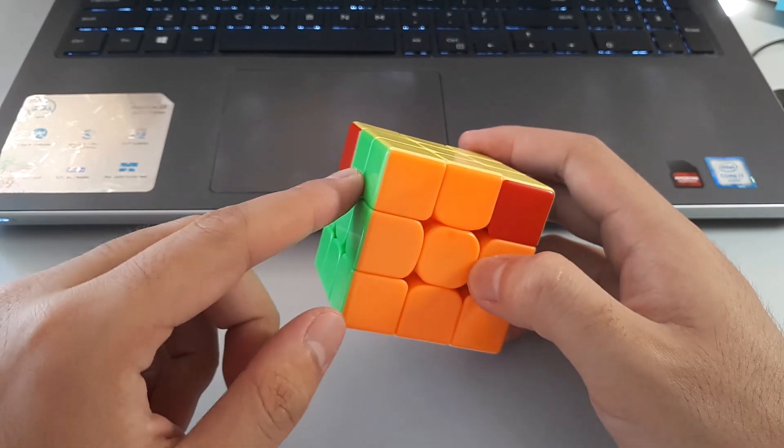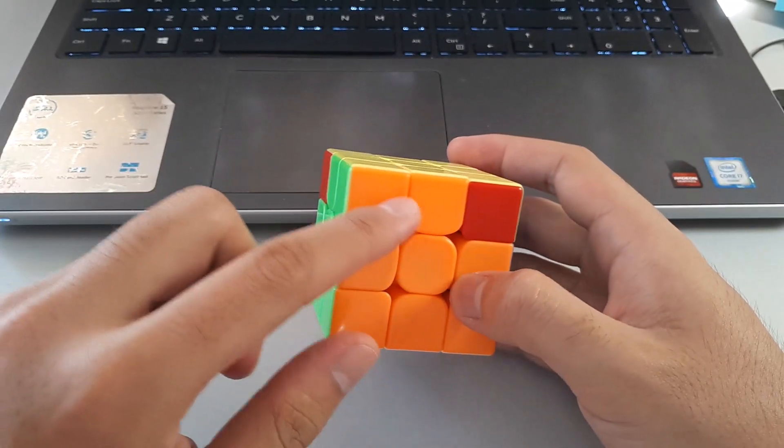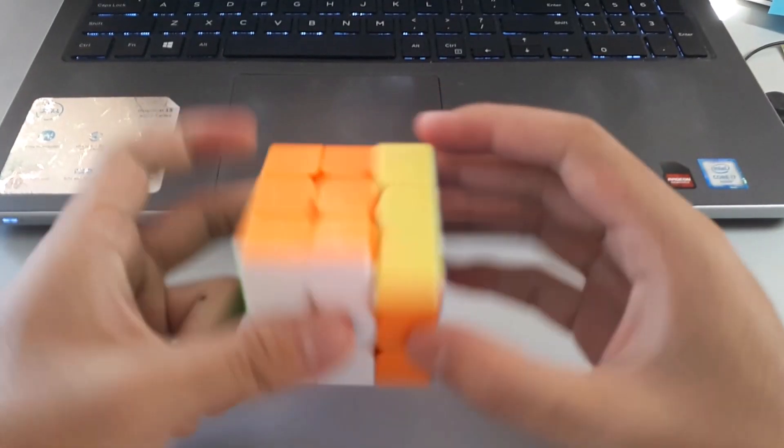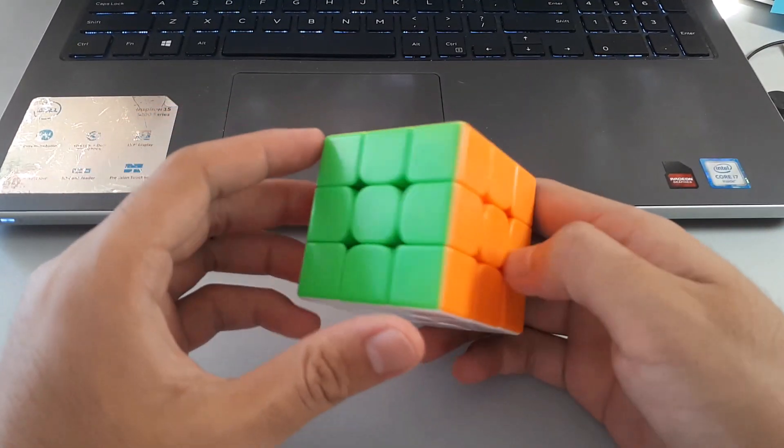So if you look at the block and orange is at the front, that means when you finish the algorithm, orange will still be at the front. So here orange is at the front, so I know where to AUF if I have to.